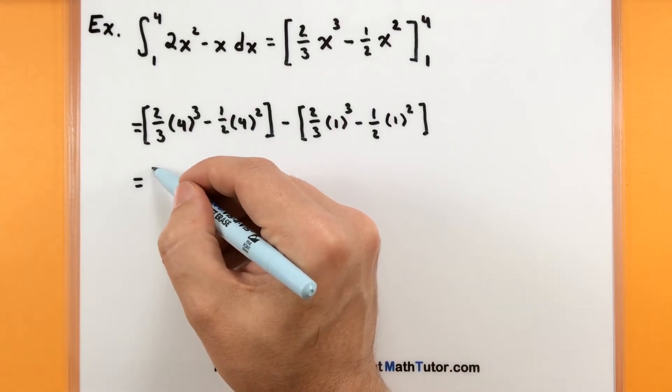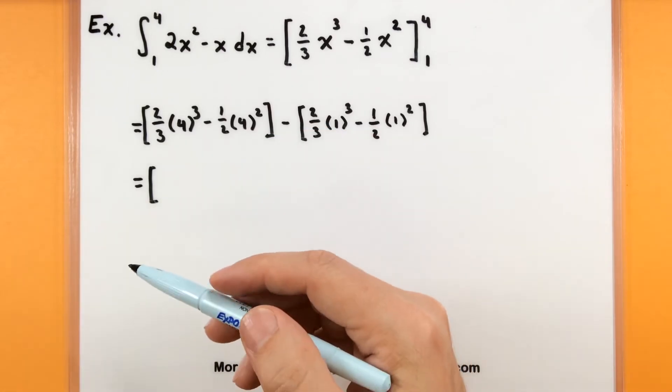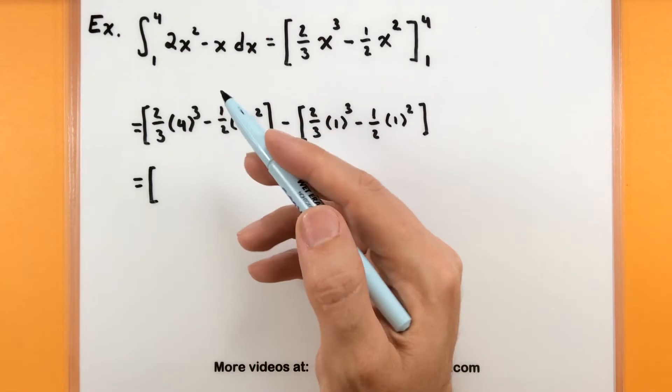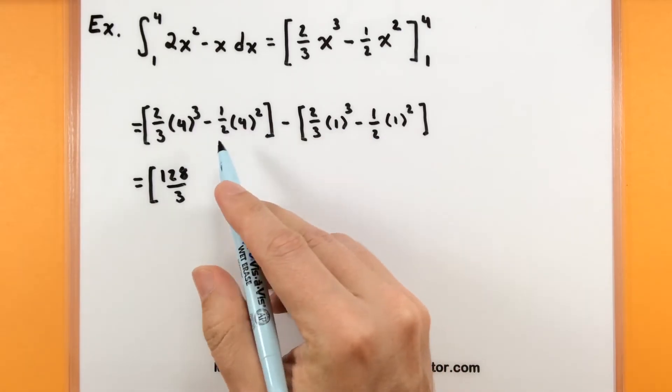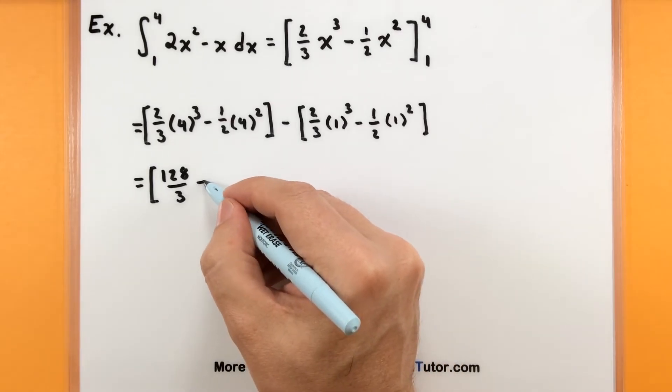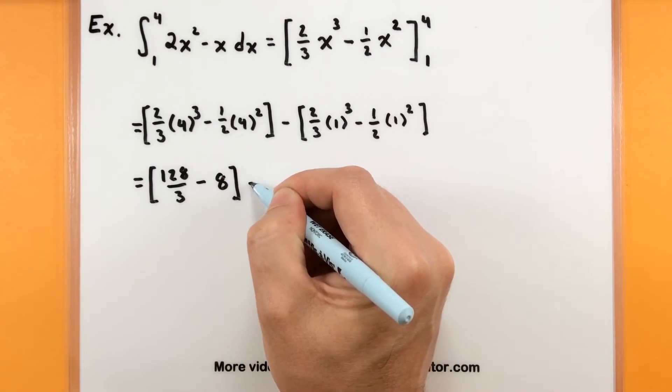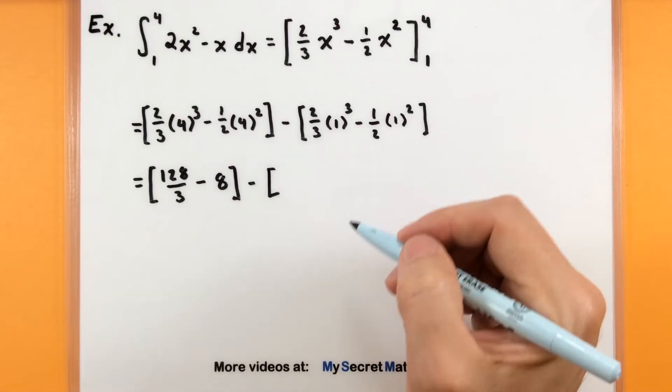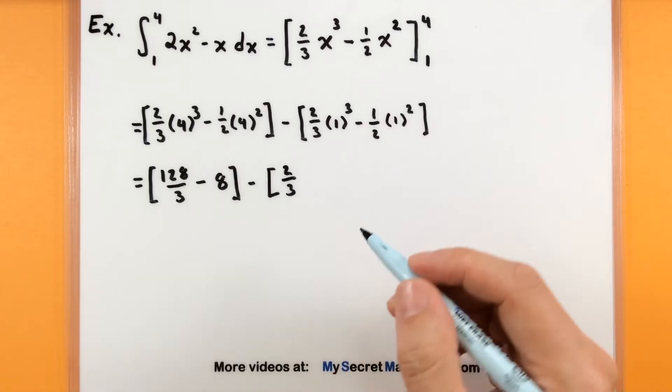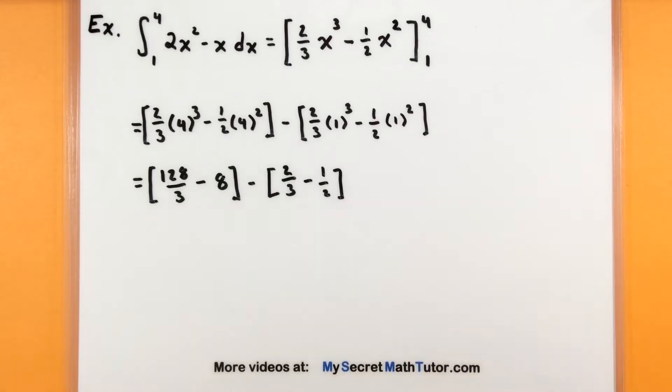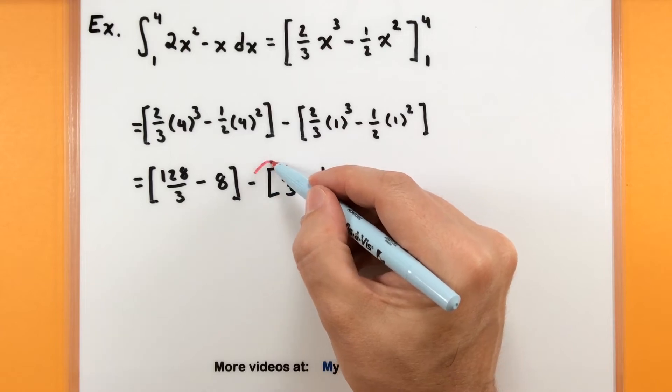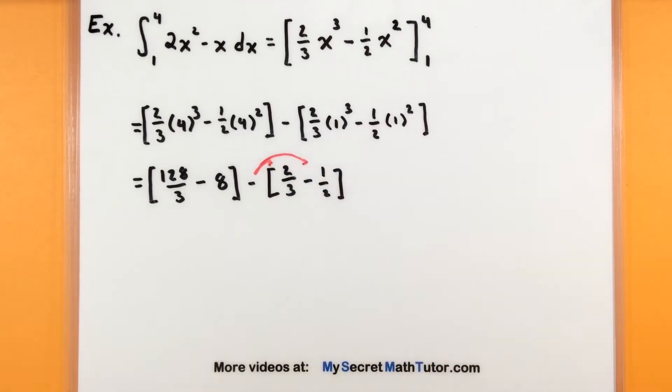Now I have to evaluate all these different cubes and squares. So at this point, it's really a bookkeeping problem, just trying to keep track of what numbers you should get. 4 cubed would be 64 times 2, there's 128, divided by 3. 4 squared is 16 times a half, so that'll turn into 8. Off to the other side, 1 cubed is just 1, so that'll be 1 times 2 thirds, there's 2 thirds. And 1 squared is 1, so there's our 1 half. I'm definitely keeping those grouping symbols as much as I can. Eventually we will distribute into the second grouping symbol so we can start combining even more things.